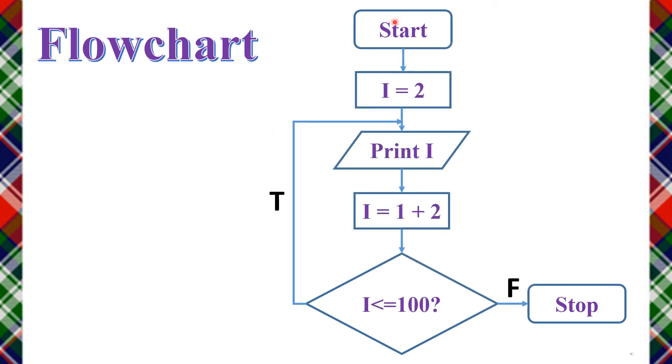Now let's see the flowchart. Start, and next we print even numbers from 2 to 100. So 2 is the initial value, so I equal to 2. And next we print I's value, so we print I. Then I equal to I plus 2, so we increase by 2 each time.